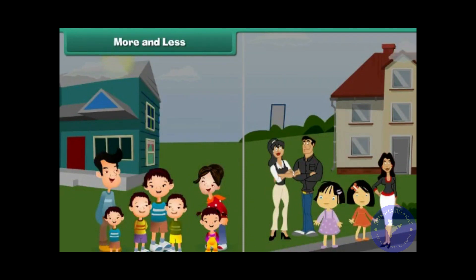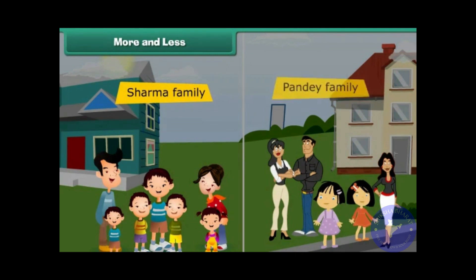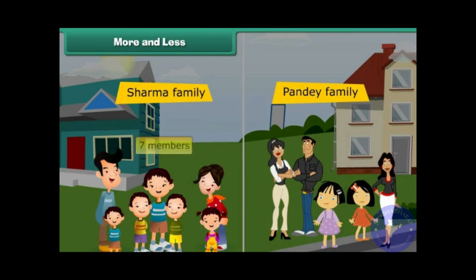Look at these two pictures. On the left is the Sharma family. On the right is the Pandey family. Which family has more members? Sharma family has seven members. Pandey family has five members. Therefore, Sharma family has more members.